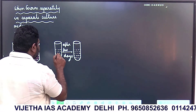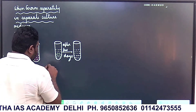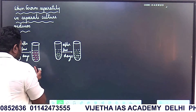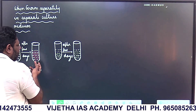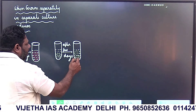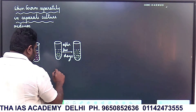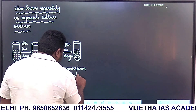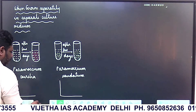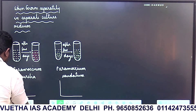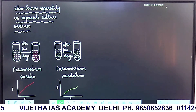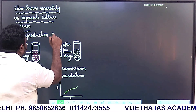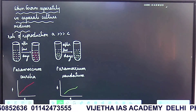Paramecium caudatum also multiplied, but the rate of multiplication of aurelia is much greater than that of caudatum. If you plot a graph between population and number of days, it is clear that the rate of reproduction of aurelia is much higher than caudatum.